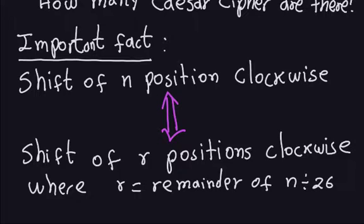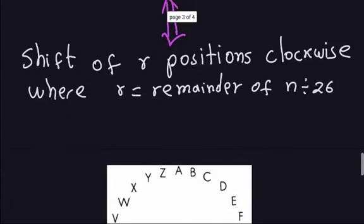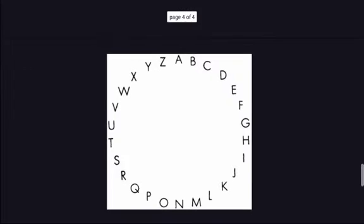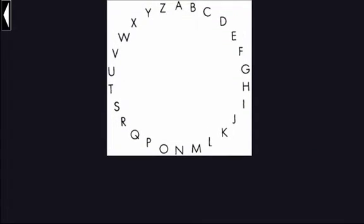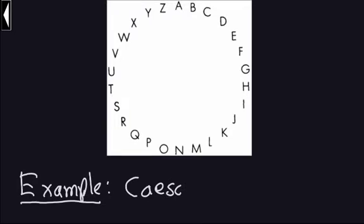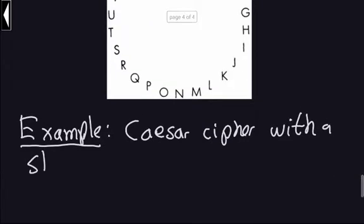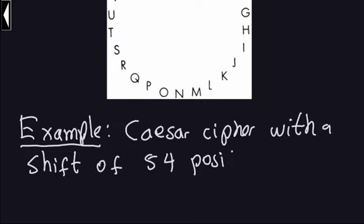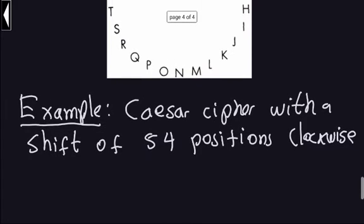I'll give you a couple of examples to emphasize the importance of this fact. Here again I have my arrangement of letters in a circular manner. Let's look at the following example: suppose we have a Caesar cipher with a shift of 54 positions clockwise. This is the cipher that Alice and Bob agree on.